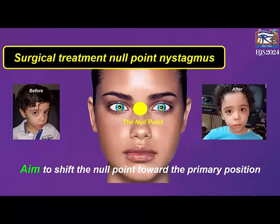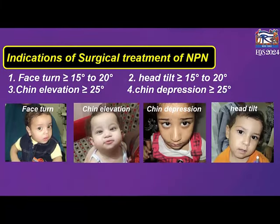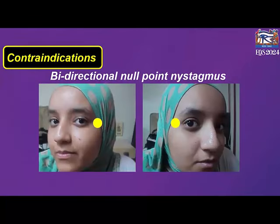Indications of surgical interference in cases of null point nystagmus are: first, a head turn more than 15 to 20 degrees, or chin elevation or chin depression more than 25 degrees. The contraindication of surgical interference is bidirectional null point nystagmus.